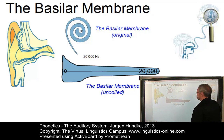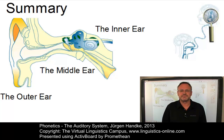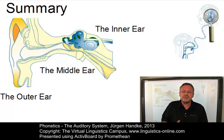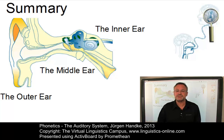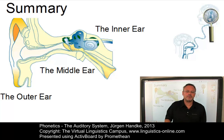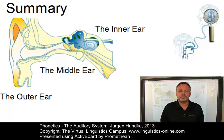So much for the three components of the ear: the outer ear, which is filled with air; the middle ear, which is a sort of mechanical amplifier by means of a leverage system; and the inner ear, which picks up the impulses of the ossicles and converts them to nerve impulses transmitted to the brain. Let us finally see a short video produced some time ago, which summarizes the central functions of the components of the human auditory system.